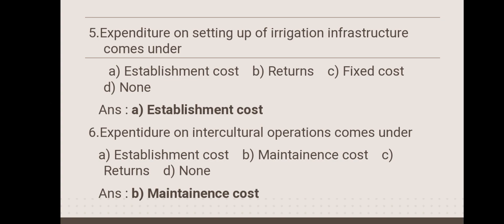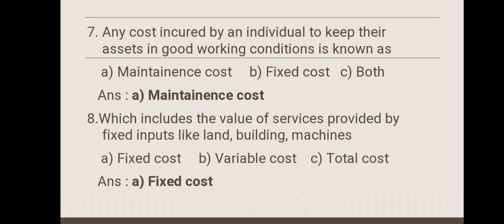Next: expenditure on setting up of irrigation infrastructure comes under — establishment cost, returns, fixed cost, or none? It comes under establishment cost. Next: expenditure on intercultural operation comes under — establishment cost, maintenance cost, return, or none? It comes under maintenance cost.